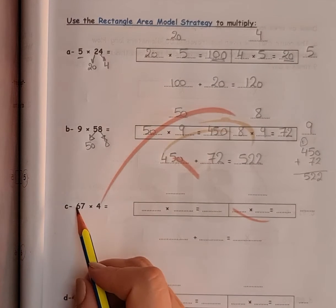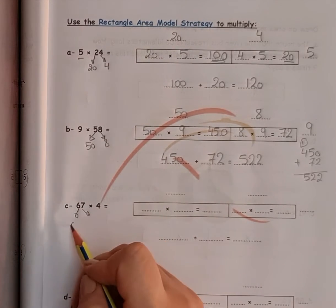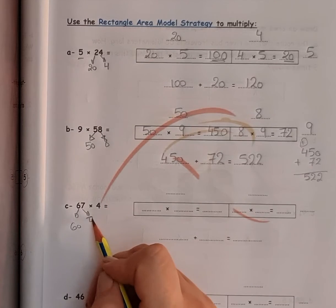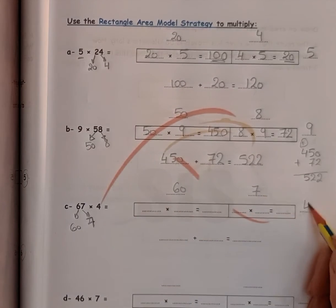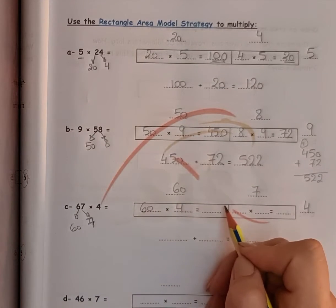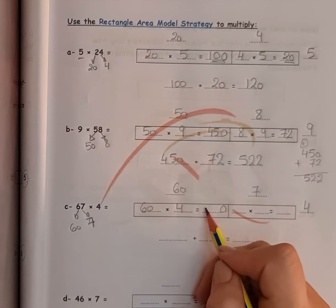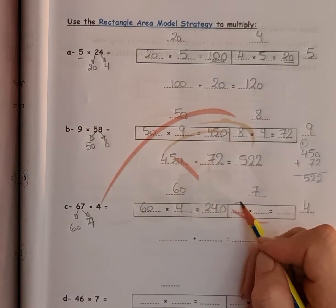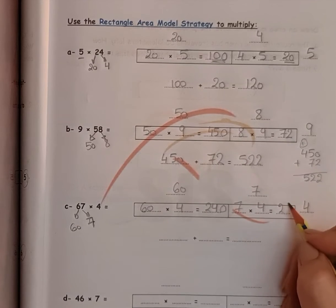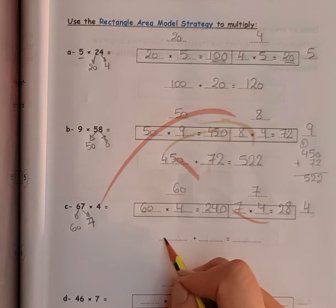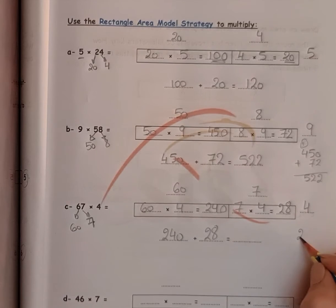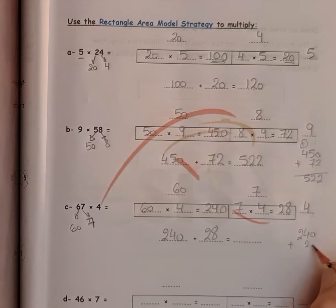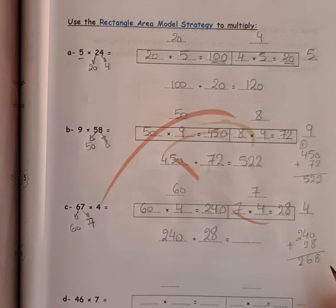Question C: 67 times 4. Break this down into 60 and 7. So 60 times 4: kick the 0 out, 6 times 4 equals 24, giving 240. Then 7 times 4 equals 28. Add the answers together: 240 plus 28. Do it in your workout — the answer is 268.